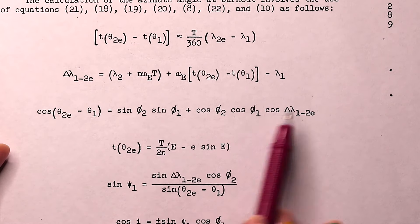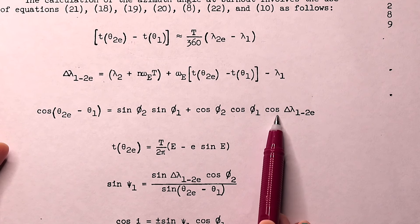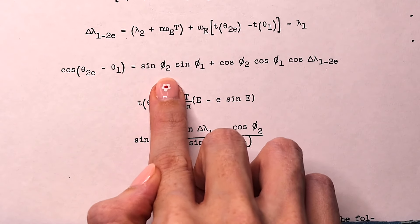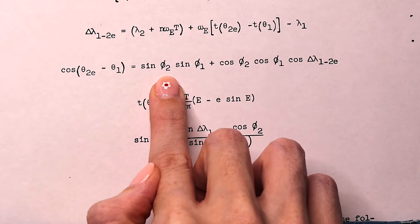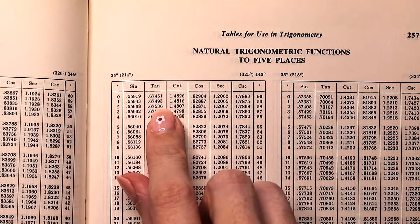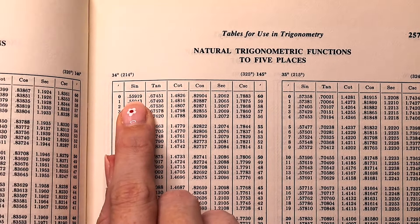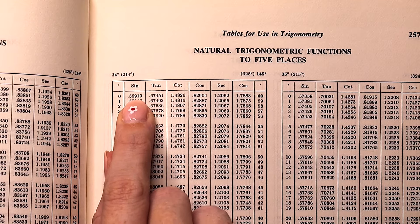And taking the sines, cosines, or inverse cosines can be done by looking it up in the table. For example, the sine of phi 2, our latitude 34 degrees, would be 34 degrees 0.0. The sine is 0.55919.